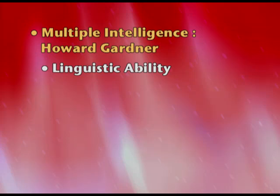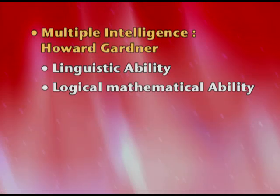The first component is linguistic ability — language-based and communication-based. Poets, writers, public speakers, and debaters will have very good linguistic ability. Second is logico-mathematical ability, dealing with maths, numbers, logic, and scientific ability. Nobel Prize winners, mathematicians, and scientists have this ability.